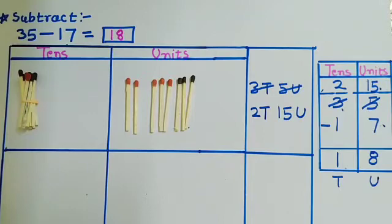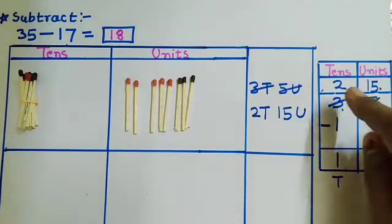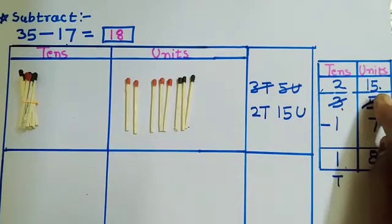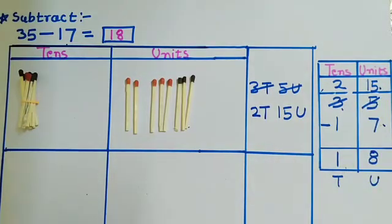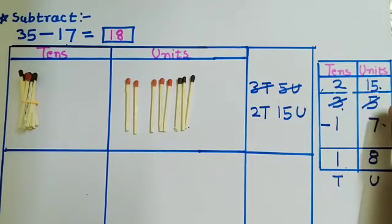Like this, children, you can solve any subtraction problem with the help of untying. Remember: when we cannot subtract a bigger number from a smaller number, we borrow 1 ten from the tens column, make it 10 units, and add it to the units. If the number above is already not smaller than the one below, then we don't need to take any ten from the tens column.